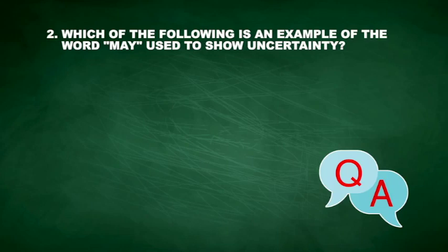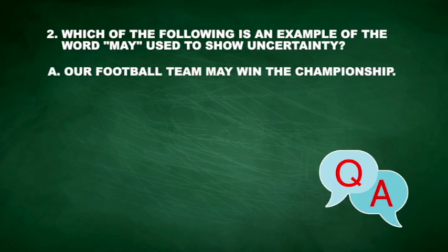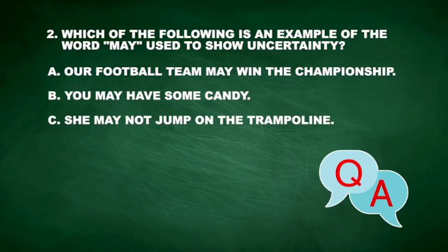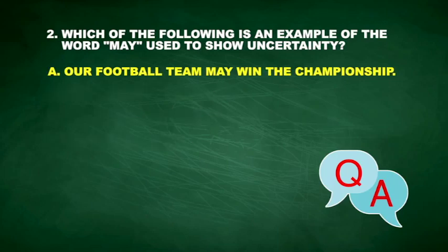Question 2: Which of the following is an example of the word 'may' used to show uncertainty? A. 'Our football team may win the championship.' B. 'You may have some candy.' C. 'She may not jump on the trampoline.' D. None of the above. If you answered A, you know that 'our football team may win the championship' shows uncertainty.